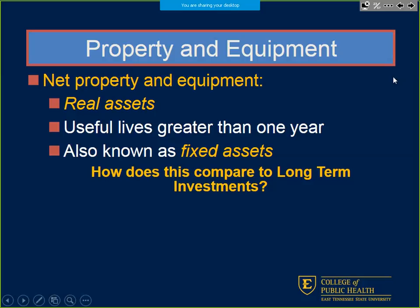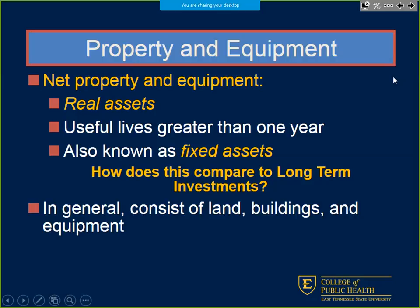Next, property and equipment — these are real assets but they're fixed. We can't exchange them on the market. In comparison to long-term investments where we can sell stock or an investment, fixed assets are harder to convert to cash because they're fixed — we'd have to go through the selling of land, equipment, or property.